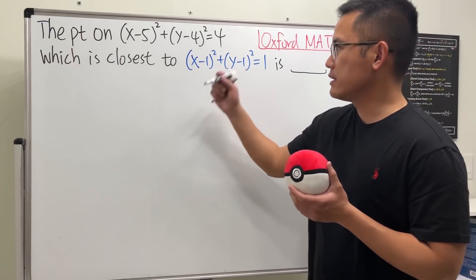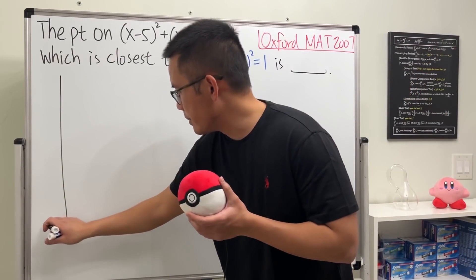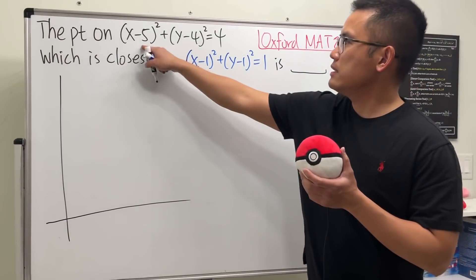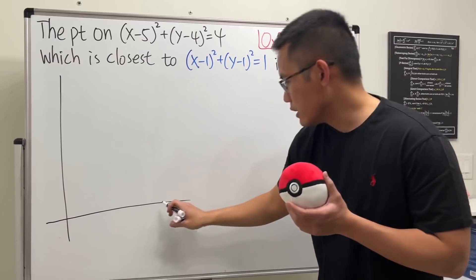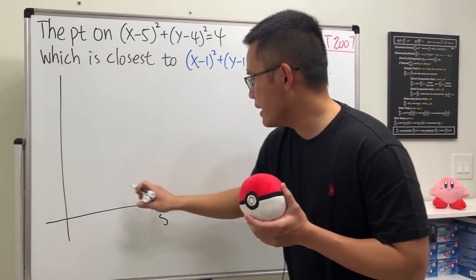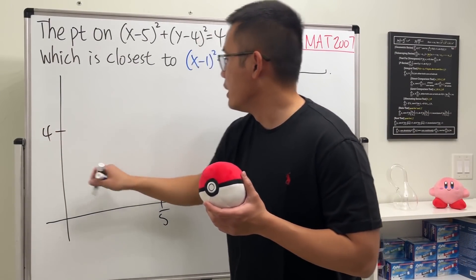Of course the picture will be really helpful, so let's take a look. First off, here is the picture and this circle has center at (5,4), so let me just say here is 5 and let's say here is 4.